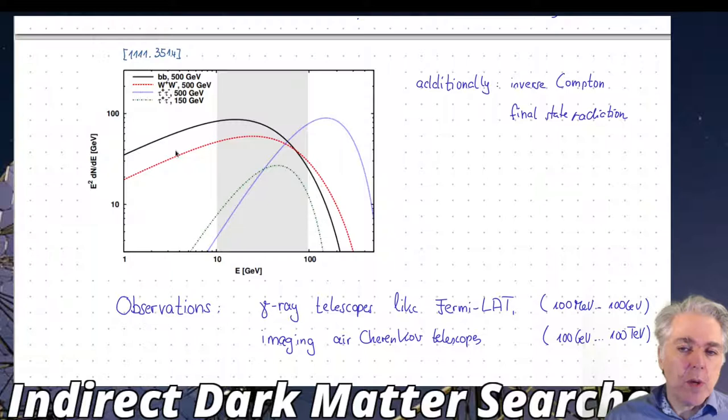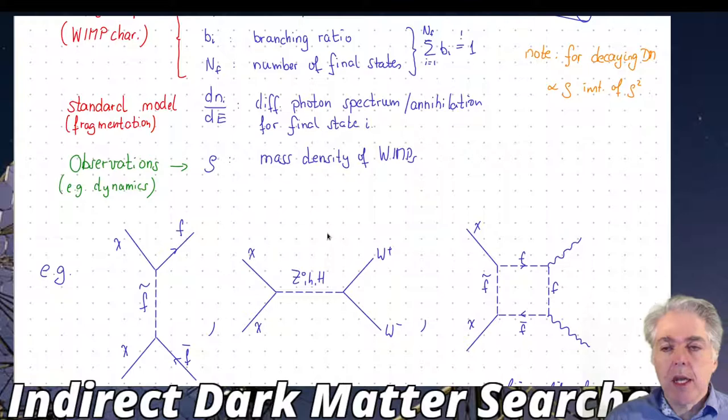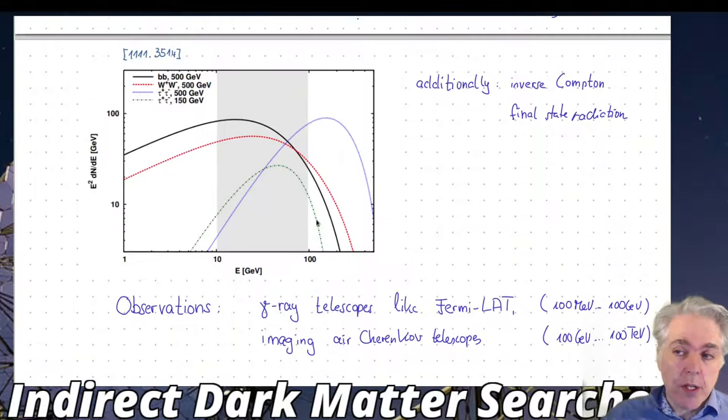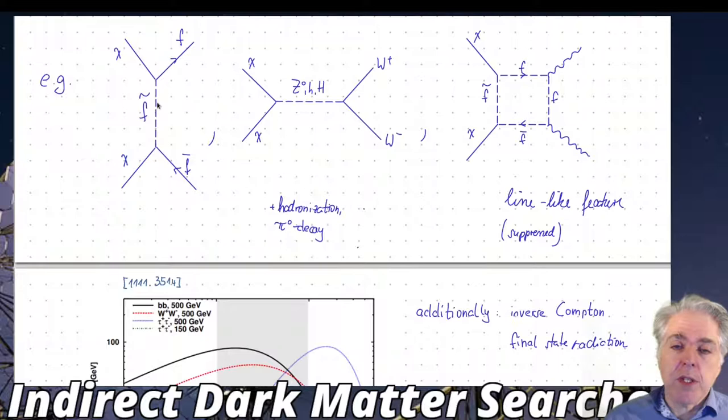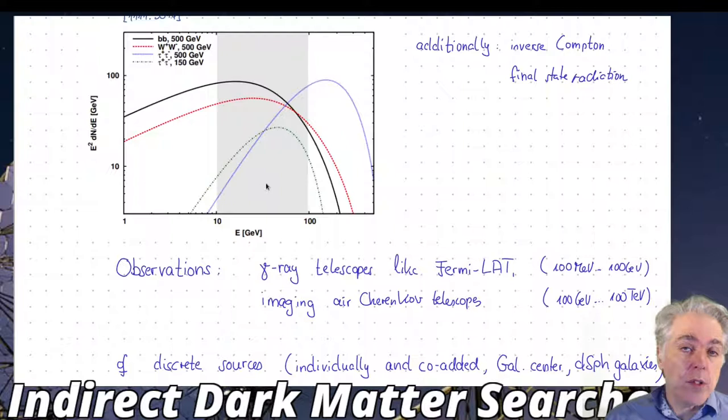There may be a little bit of line emission at 500 GeV, however because this is a loop suppressed process it's very little. For W+ W- you find a quite similar spectrum even though the mass is the same but with some differences. In the case of tau+ tau- you get a quite distinctly different spectrum, much harder with more photon energy radiated away at the endpoint. That has to do with the fact that the tau will produce leptons and they will do final state radiation. Additionally some processes will produce electrons and positrons which produce gamma rays via inverse Compton scattering.